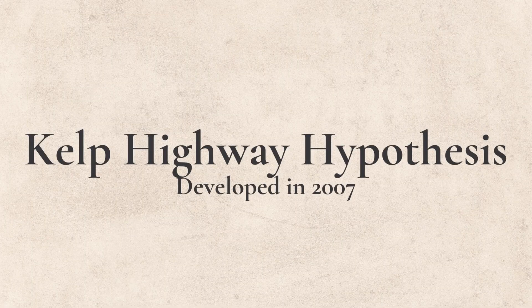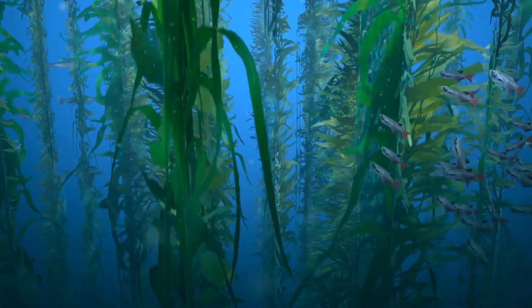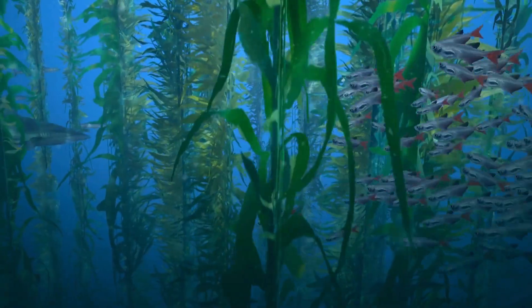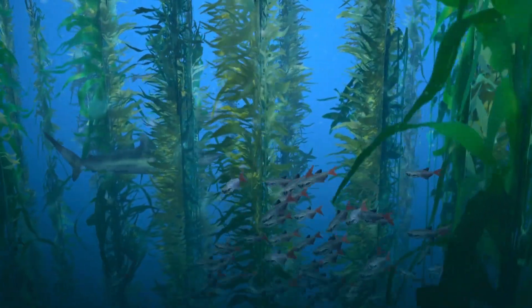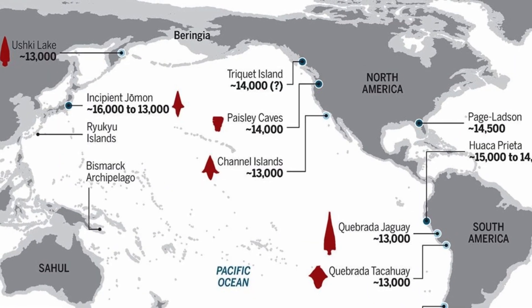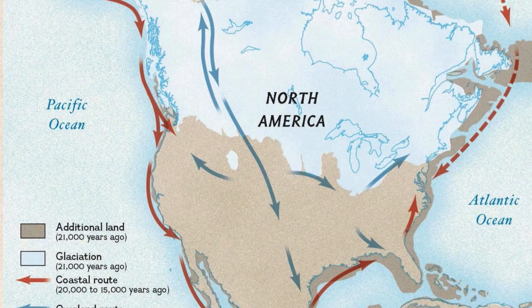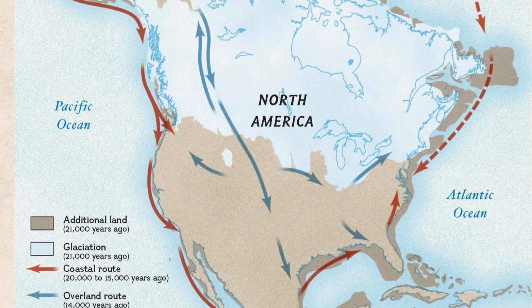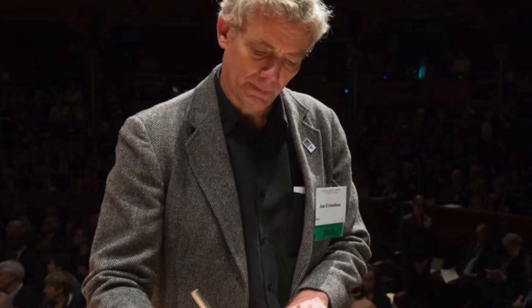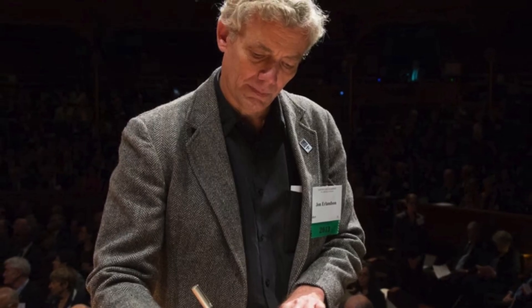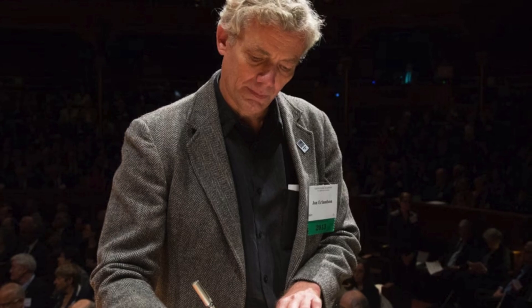On the other hand, the Kelp Highway Hypothesis, also known as the Pacific Coastal Route Hypothesis, contends the first theory by proposing that instead the first inhabitants of America were seafarers, and they followed a rich kelp path, migrating throughout the west coast of America and then spreading further inland from there. The Kelp Highway Hypothesis was proposed in 2007 by an American archaeologist by the name of John Erlund.